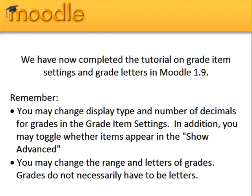We have now completed the tutorial on Grade Item Settings and Grade Letters in Moodle 1.9. Remember, you may change the display type and number of decimal points for grades in the Grade Item Settings. In addition, you may toggle whether items appear in the Show Advanced menu. You may change the range and letters of grades — grades do not necessarily have to be letters.